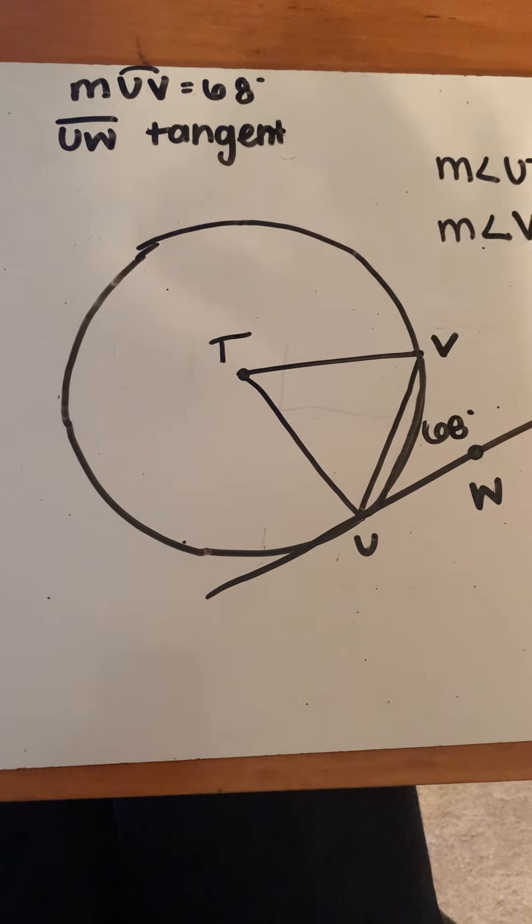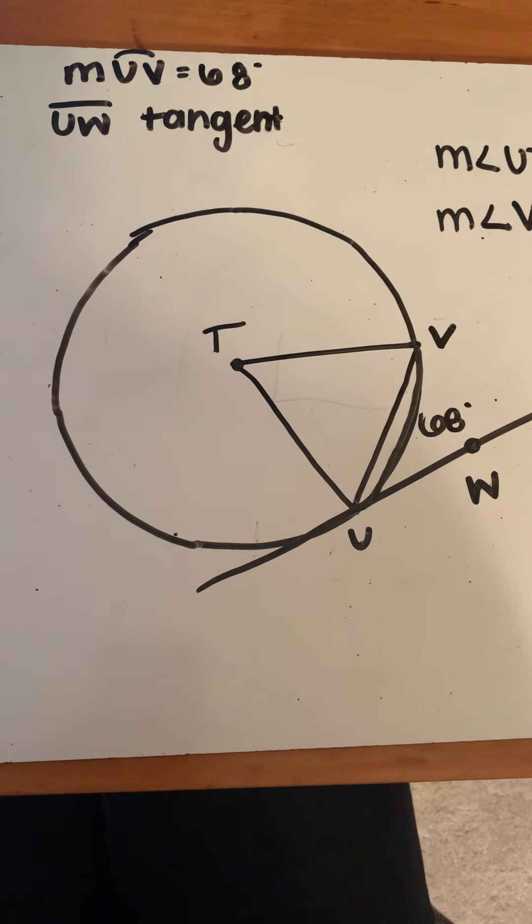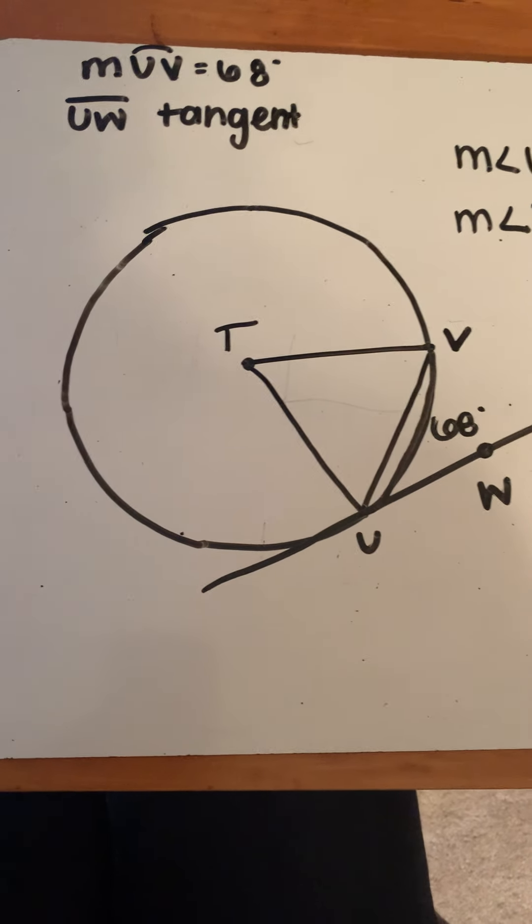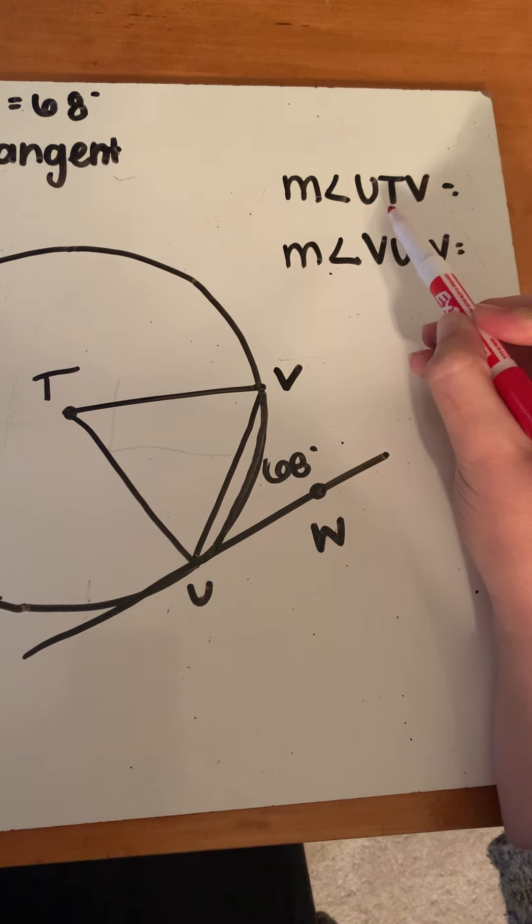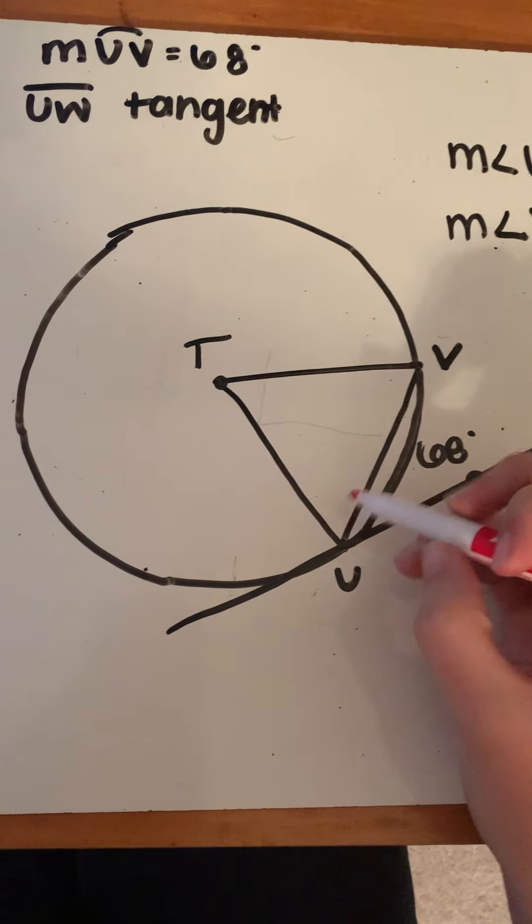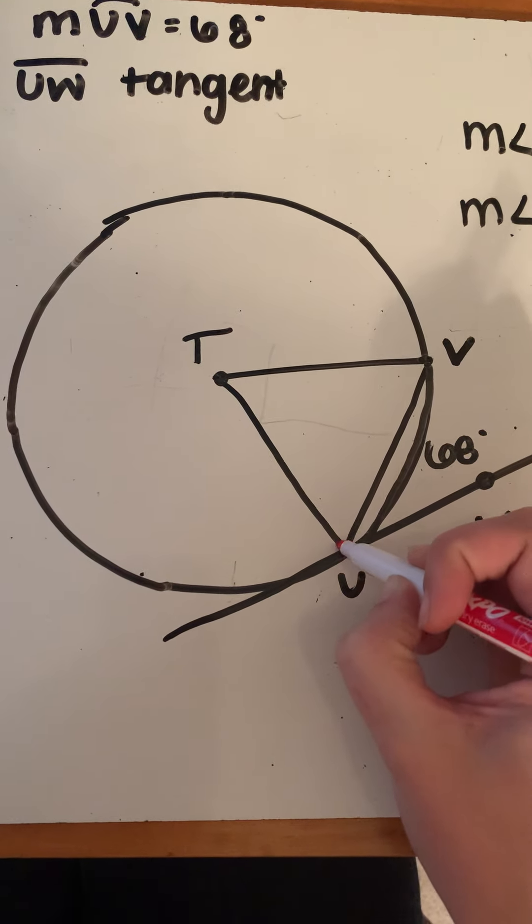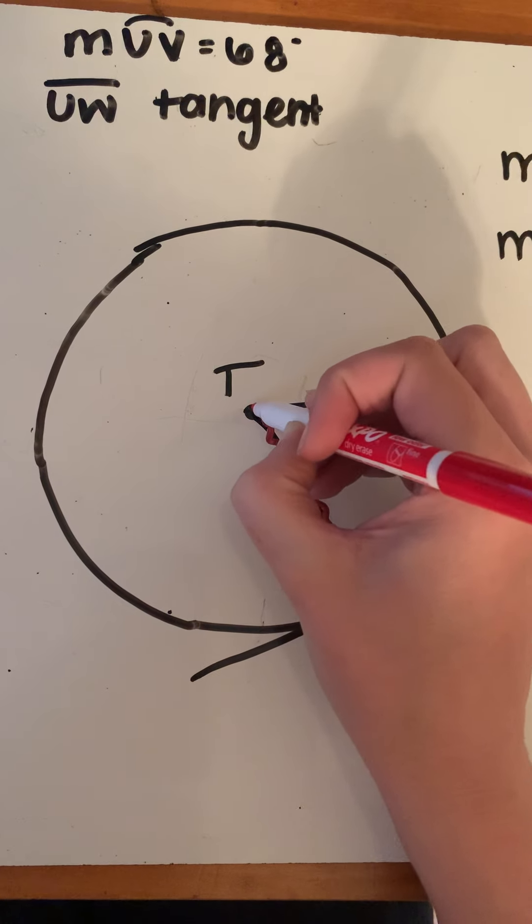We're going to find two different angles: the central angle here and what we call the chord tangent angle. Let's start with this first one. We're going to find the measurement of angle UTV. I'm going to highlight that for us: U, T, and V.